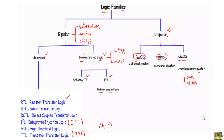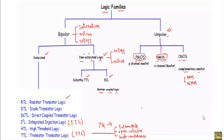Usually the transistor-transistor logic circuit has three output structures. The first is known as the totem-pole structure, the second is known as the open-collector structure, and the third is known as the high-impedance state, also called the tri-state output of the circuit.